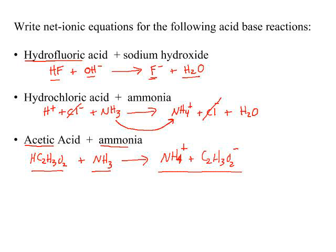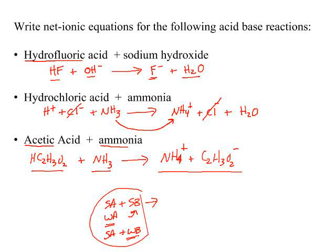As you review back over these, note that when you have a strong acid and a strong base, the reaction is pretty straightforward: OH- and H+ form water. When you have a weak acid and a strong base, the weak acid is written in its molecular form. When you have a strong acid and the weak base ammonia, your weak base is written in its molecular form. Pay attention to these distinctions and you will be able to get all of these net ionic equations completely correct.